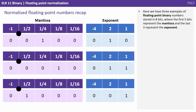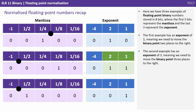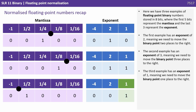Here we have three examples of floating point binary numbers stored in 8 bits, where the first 5 bits represent the mantissa and the last 3 bits the exponent. The first example has an exponent of 2, meaning we move the binary point 2 places to the right. The second has an exponent of 3, moving the point 3 places to the right. The third has an exponent of 1, moving the point 1 place to the right.